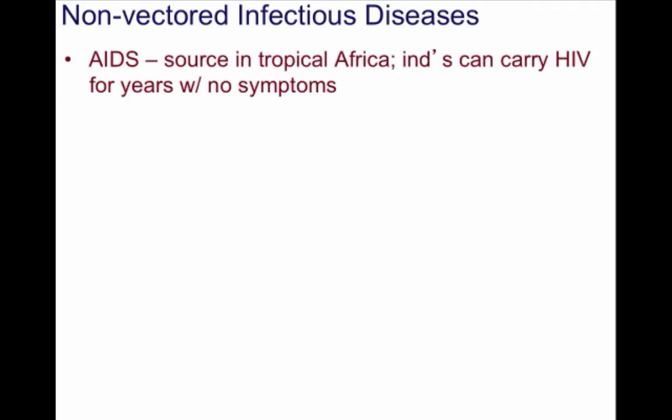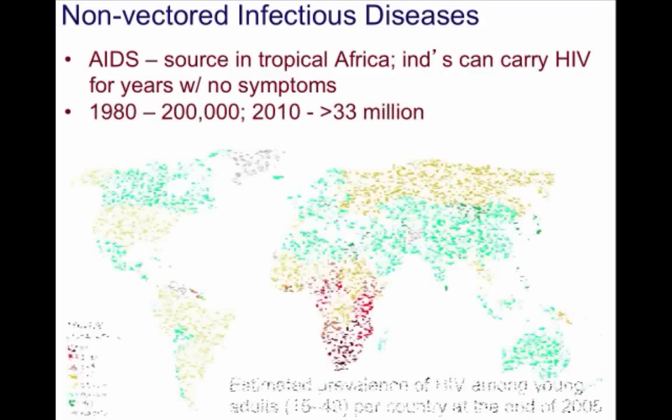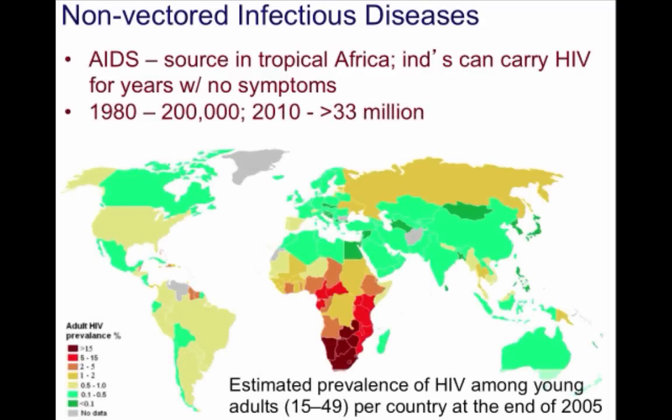The source of AIDS, or Acquired Immune Deficiency Syndrome, is in tropical Africa. It is caused by HIV, or the Human Immunodeficiency Virus. It is an STD but can also be transmitted through blood transfusions, although this is highly unlikely today due to rigorous screening. It breaks down the immune system, and people can carry HIV for years without any symptoms. Back in 1980, there were around 200,000 cases reported. Today, there are estimated to be more than 30 million.